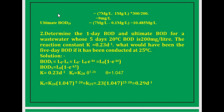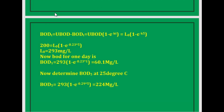For the temperature correction: K_T equals K20 times theta to the power of (T minus 20), with theta equal to 1.047. So K25 equals 0.23 multiplied by 1.047 to the power of (25 minus 20), giving K25 equals 0.29 per day. Now, using BOD_T equals L0 times (1 minus e to the power of minus KT): 200 equals L0 times (1 minus e to the power of minus 0.23 times 5). So the ultimate BOD L0 equals 293 mg/L. BOD for 1 day: BOD1 equals 293 multiplied by (1 minus e to the power of minus 0.23 times 1), which equals 60.1 mg/L.